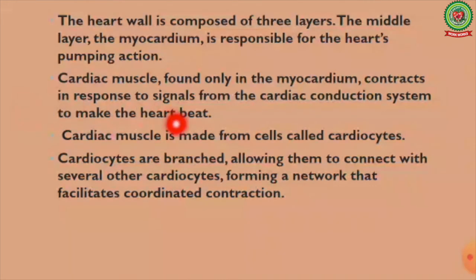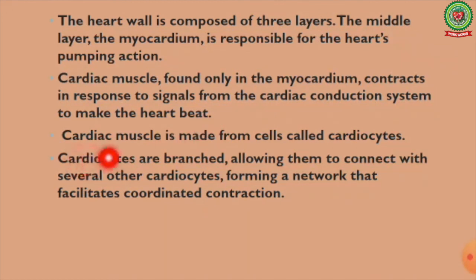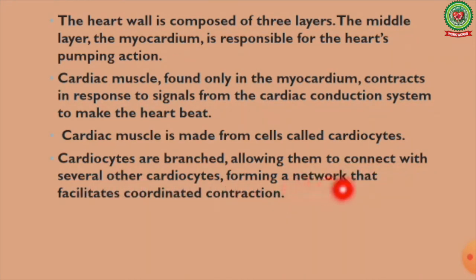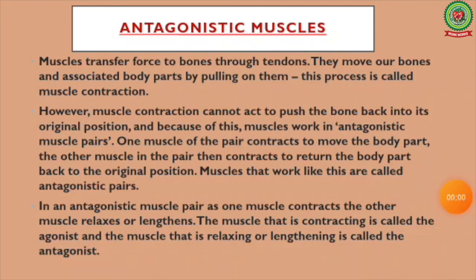The next type is cardiac muscle. The heart wall is composed of three layers; the middle layer, the myocardium, is responsible for the heart's pumping action. Cardiac muscles, found only in the myocardium, contract in response to signals from the cardiac conduction system to make the heart beat. Cardiac muscle is made up of cells called cardiocytes. Cardiocytes are branched, allowing them to connect with several other cardiocytes, forming a network that facilitates coordinated contraction. Cardiac muscles are also involuntary in action.